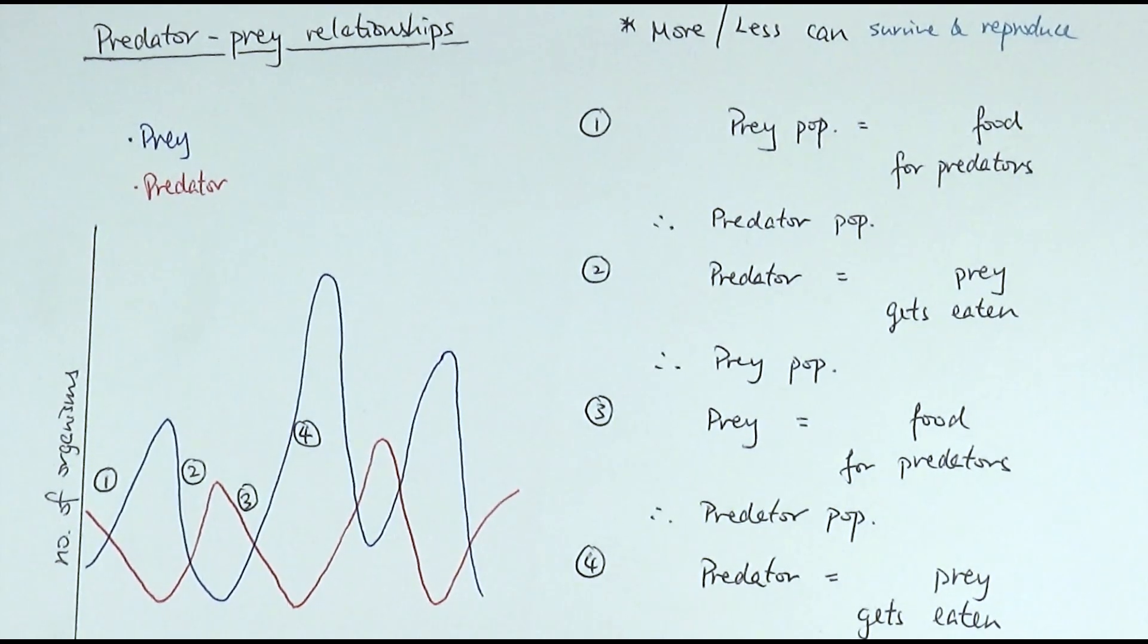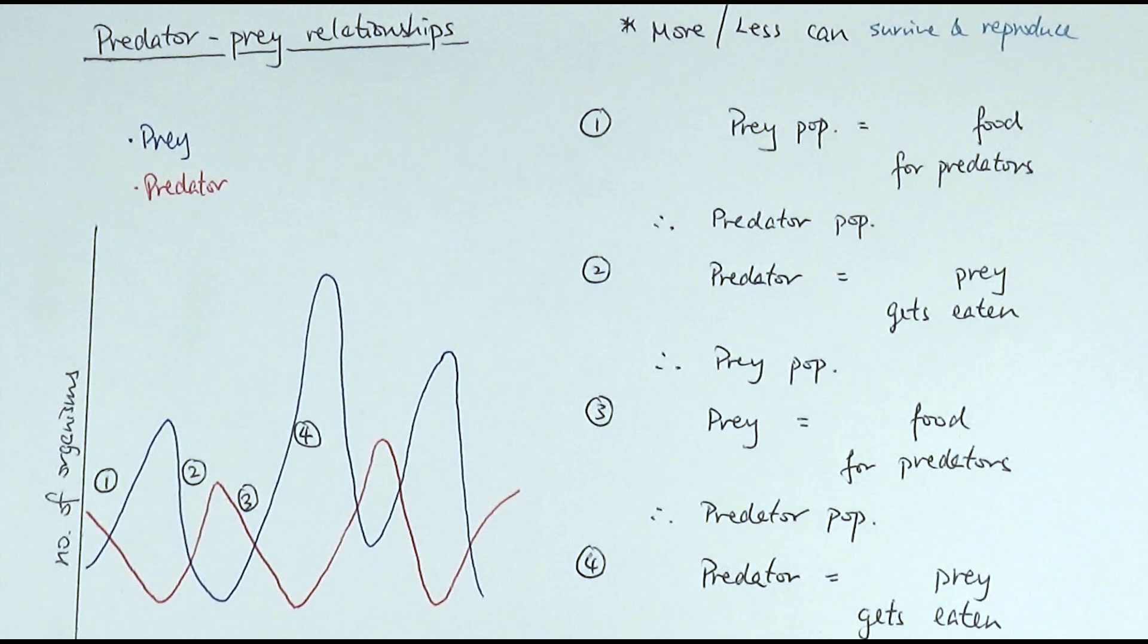So it's important to remember the phrase survive and reproduce. It's always about how more of those prey or predator can survive and reproduce or less of them can survive and reproduce. So we always use this in terms of our explanation.